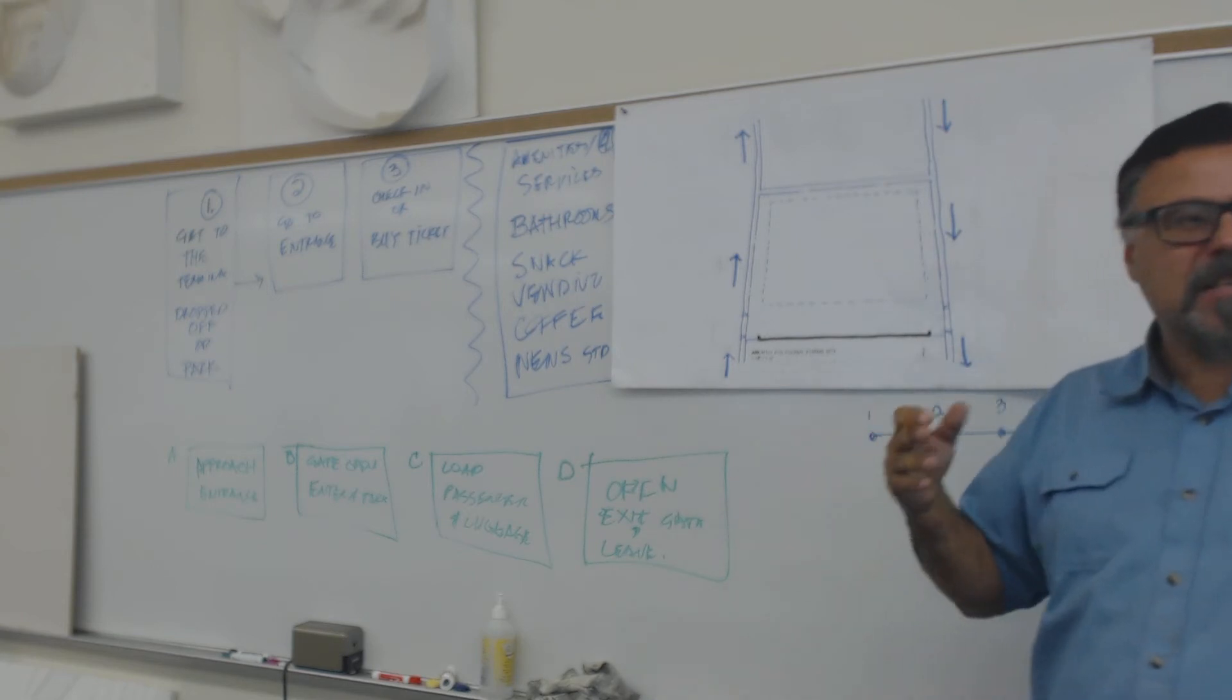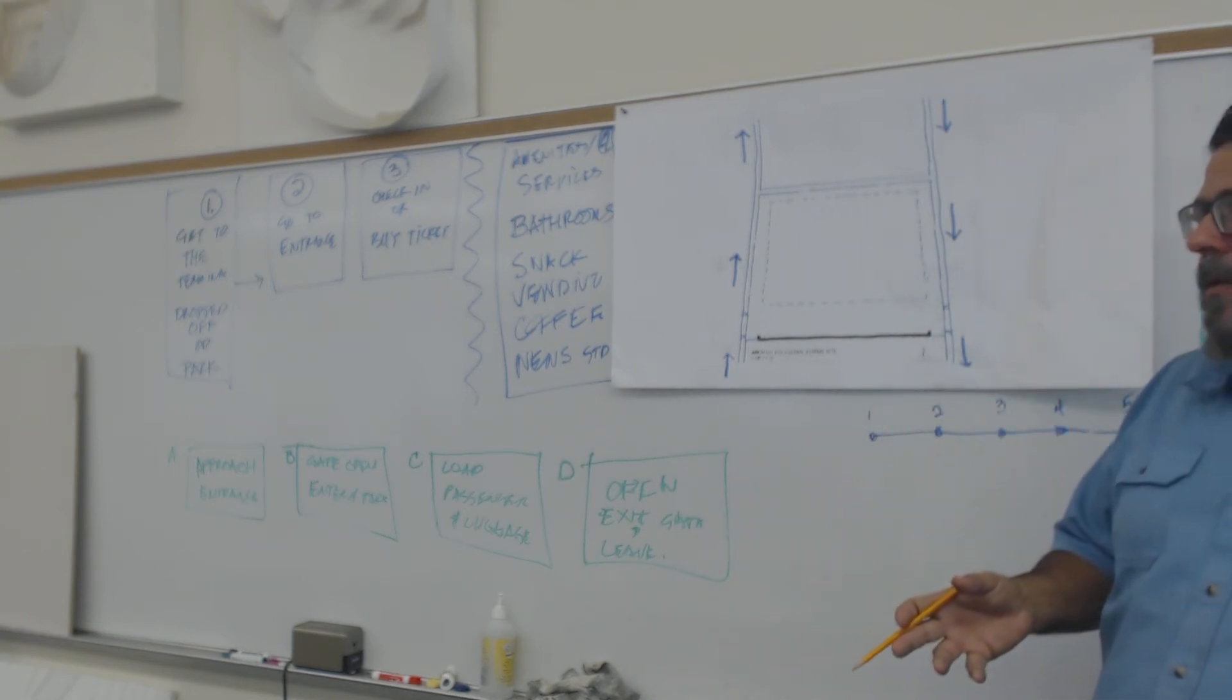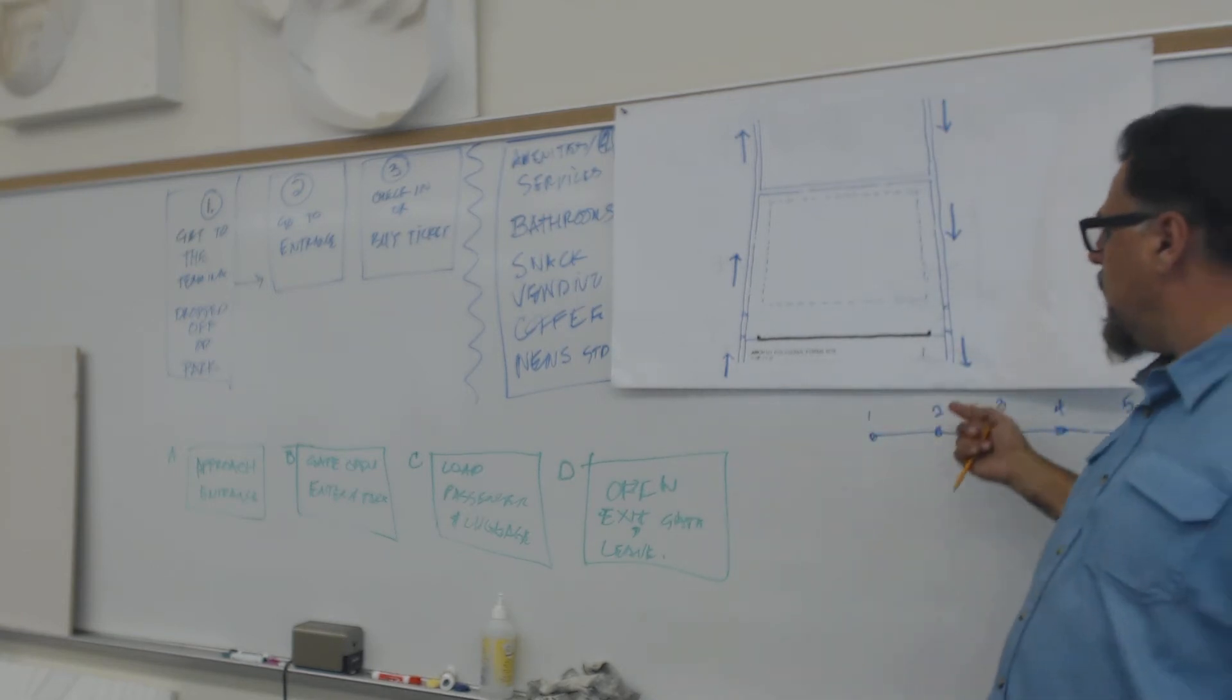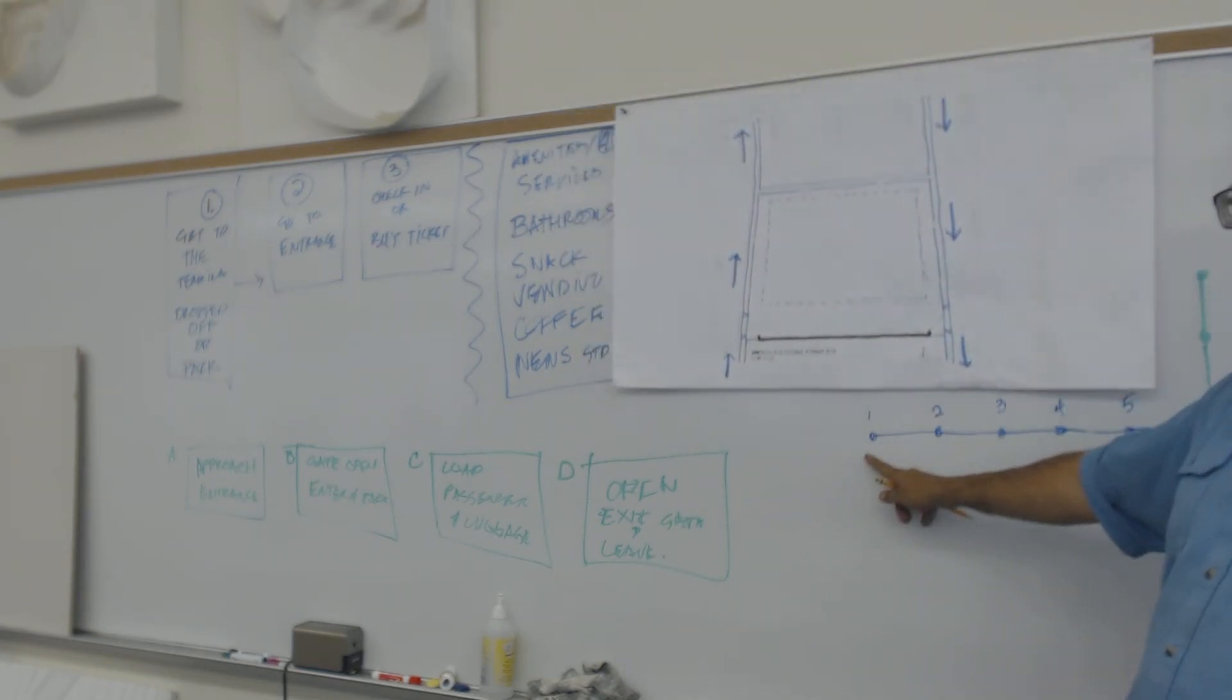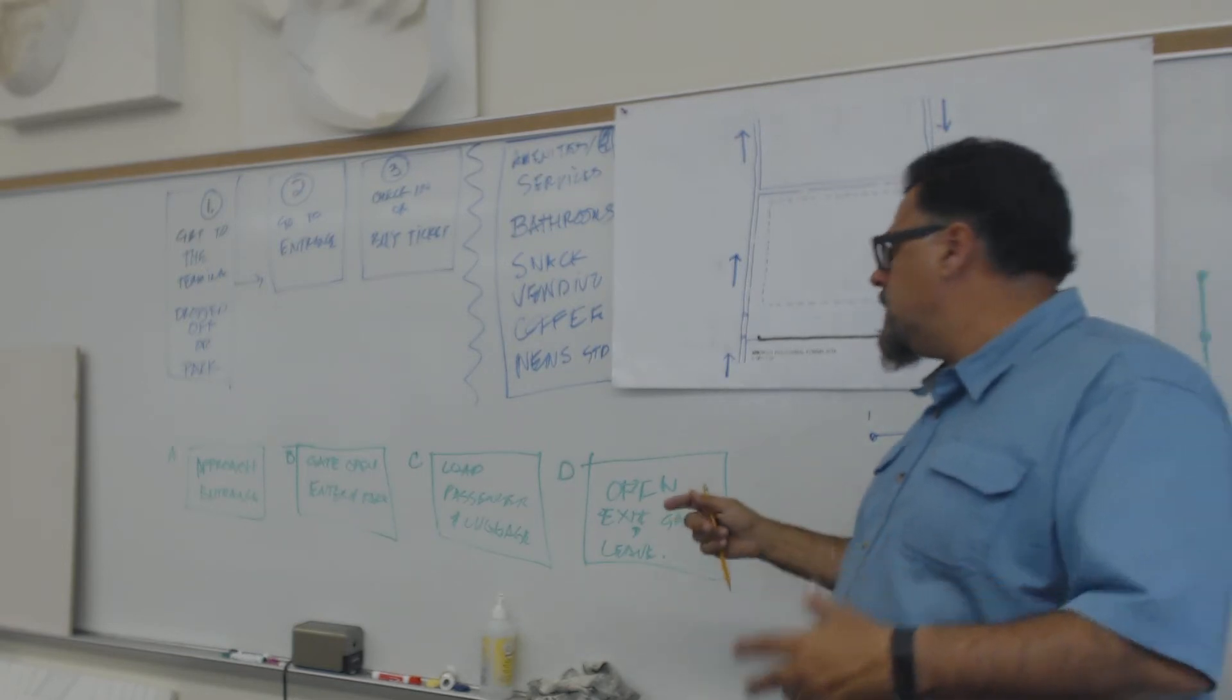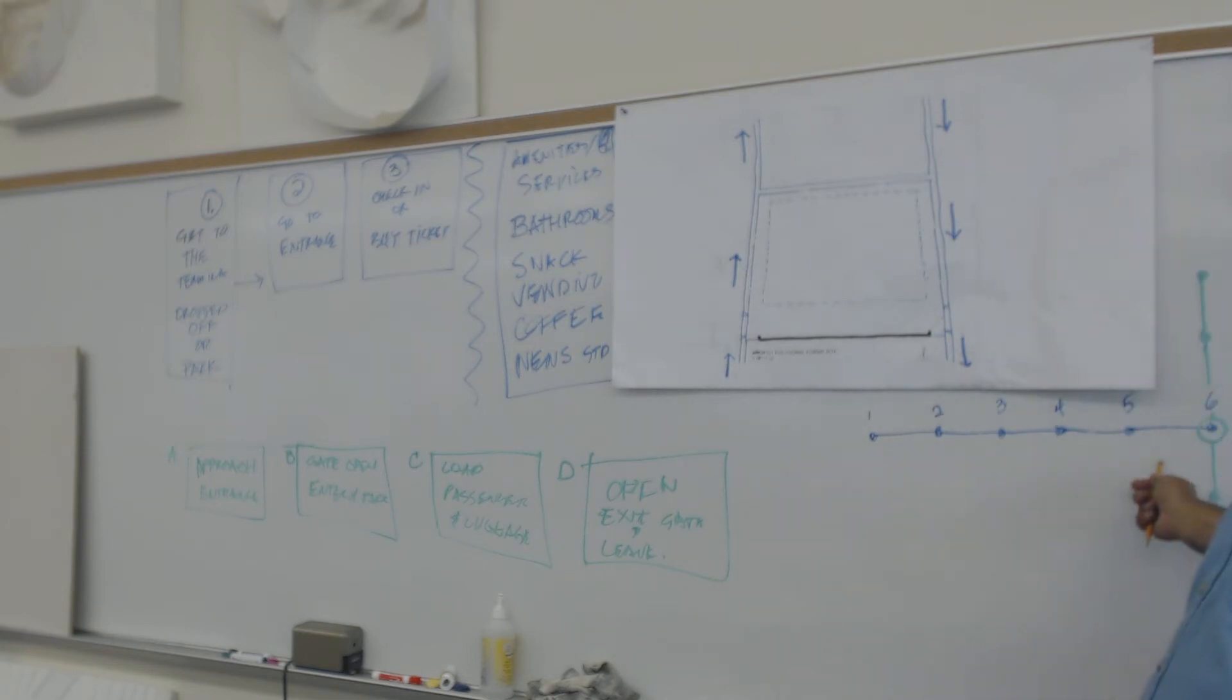The building has kind of a linear arrangement. The linear arrangement is directly related to this line. The entrance comes first, or actually, the parking lot comes first. The entrance comes second. The ticket area comes third. So now you have to start to take this sequence and apply it to your project.